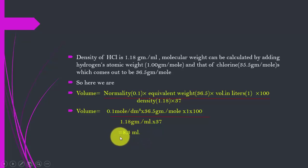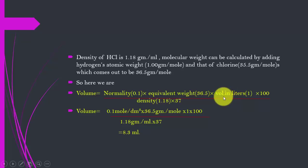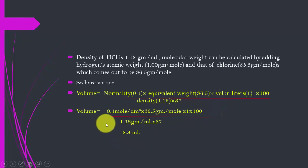So to prepare the solution, measure out 8.3 mL of the 37% HCl solution and place it into a one-liter flask. Note that if you are making the solution in 500 mL instead of 1 liter, you must convert that figure into liters. The rest of the flask is then filled with distilled water and your 0.1 normal HCl solution is ready.